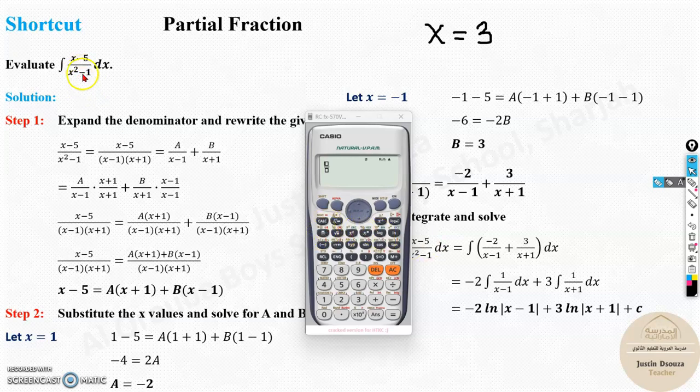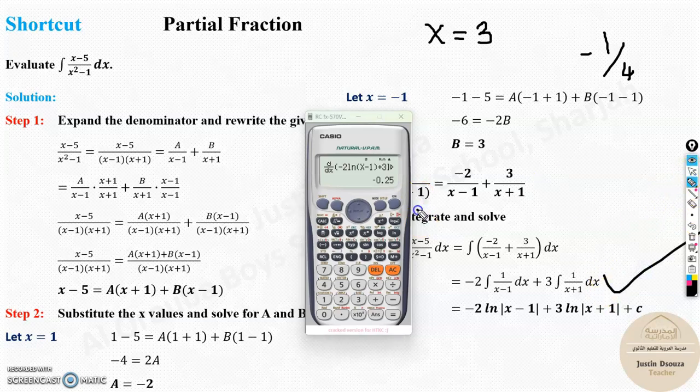Now, let's do this over here. Three minus five divided by three squared minus one. And now, note the answer. It is negative one by four. This answer, when I derive it, definite integral at x equals three must give me an answer of negative one by four. Let me check it. Negative two ln alpha x minus one, close the bracket, plus three ln alpha x plus one, close the bracket. And what is the x value equal to? We have to put it as three. And the answer is negative 0.25, which is a quarter. Negative one-fourth is negative 0.25. They are the same. So yes, this is the correct answer.